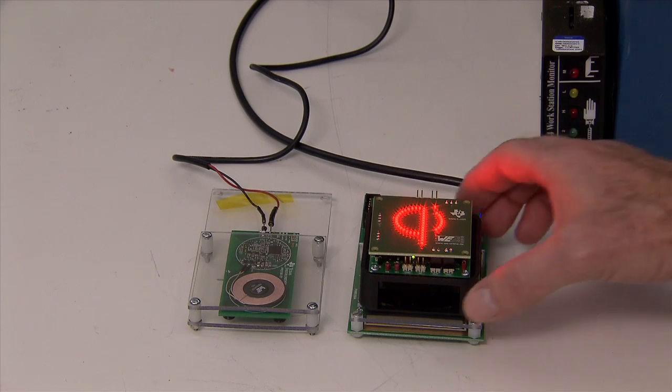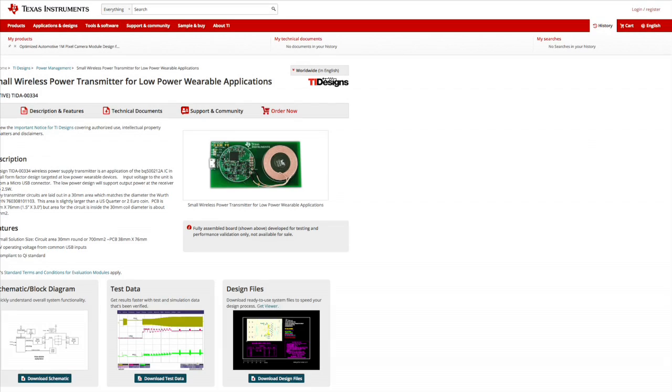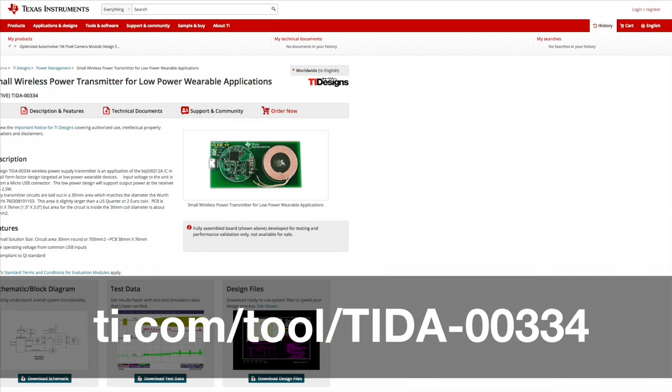Full design details of this tiny TX can be found in the TI design section of TI.com. The tiny TX can be found at TI.com/tool/TIDA-00334. Everything you need to duplicate this board is on the site, including schematics.